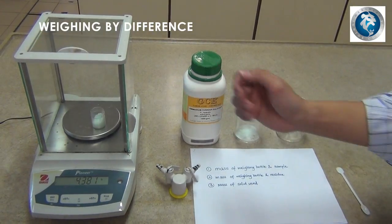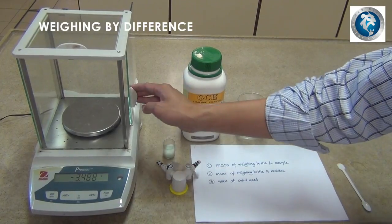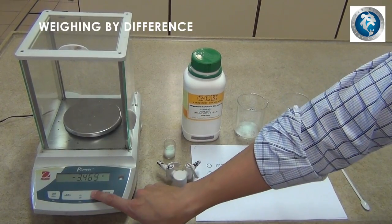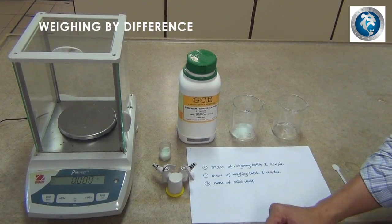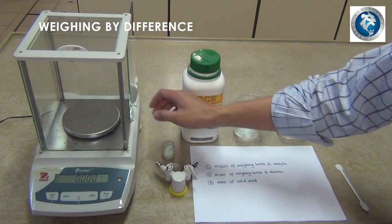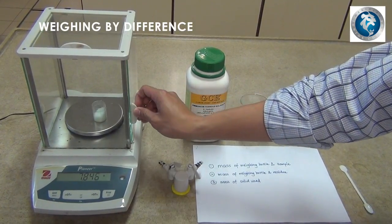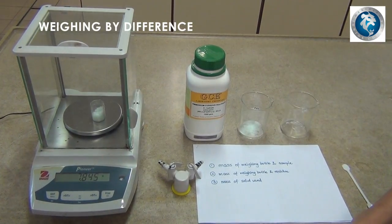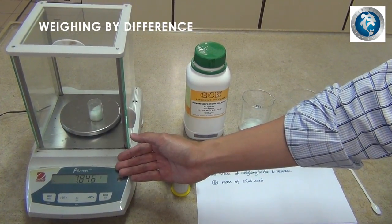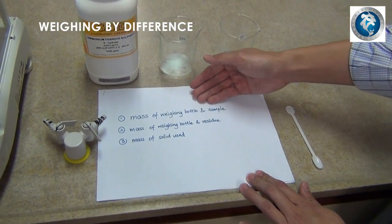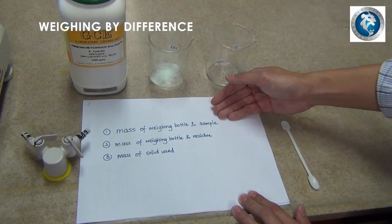Once you have reached the weight that you want, take out the weighing bottle, close the window of the weighing balance, and tare. After that, put back the weighing bottle with the solid in, and take the reading of the weighing balance. This reading would be the mass of the weighing bottle and sample that you need to record in your lab report.